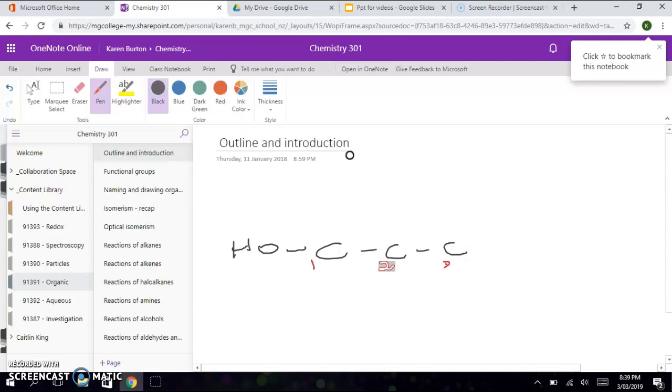so if we just number this carbon chain, one, two, three carbons. On carbon two, we have a methyl group. A methyl group is a carbon atom with three hydrogens.